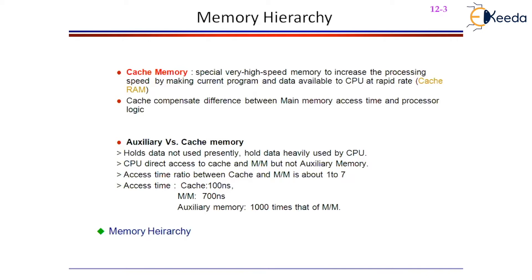When you want to execute a program, it will get transferred from secondary memory to the main memory. But when it comes to cache memory, the cache memory compensates differences between main memory and CPU, and it holds the data items required by the CPU currently. So auxiliary memory holds the data not used presently, but cache memory holds the data which is used presently.